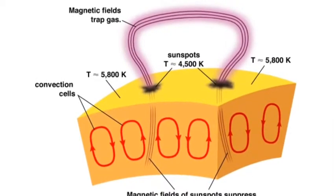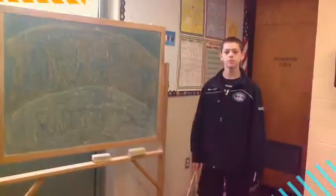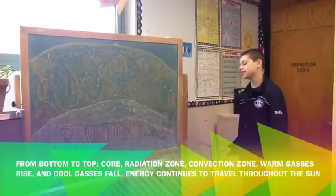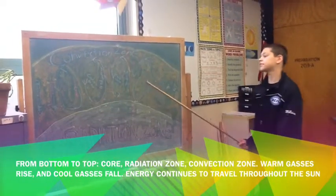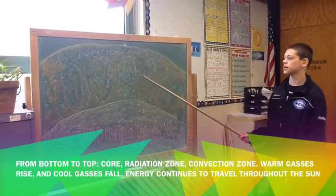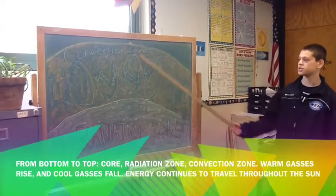Please now look at the chalkboard diagram. This is part of the sun. This is the core, the radiation zone, and the convection zone. This is where the hot gases rise and the cooling gases fall and the self-scaling energy grows.